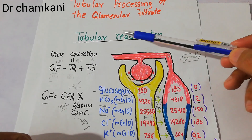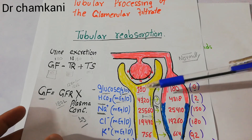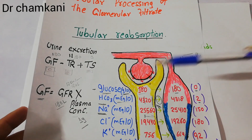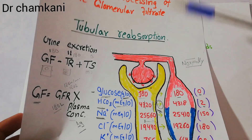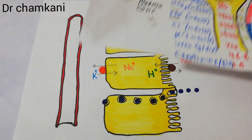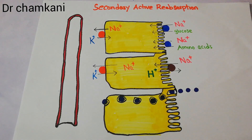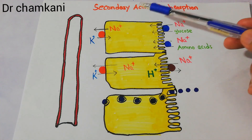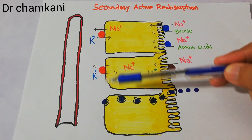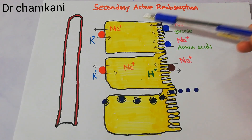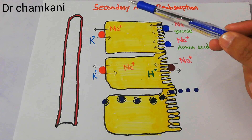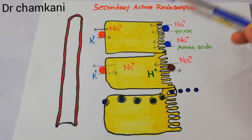The tubular reabsorption process is either passive, without use of energy, or it is active, which requires energy. Active reabsorption of substances from the proximal tubule into the blood is either primary active or secondary active.